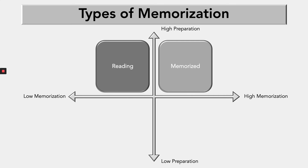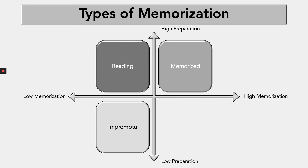There's another type of memorization: impromptu. Impromptu is low memorization and low preparation. An impromptu speech is one where you only have seconds to prepare — you literally find out the topic when it's time to deliver. In class, I've asked you a question, the audience claps, and maybe you have three to five seconds before you start talking. It's low preparation because you have no time, and low memorization because you just have to speak on the cuff. Impromptu is its own animal — comparing it to memorized speeches is like comparing quantum physics to Newtonian physics.